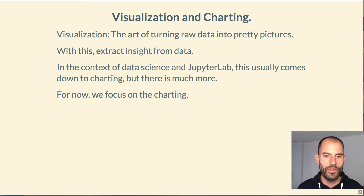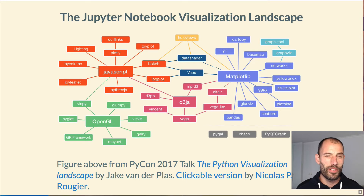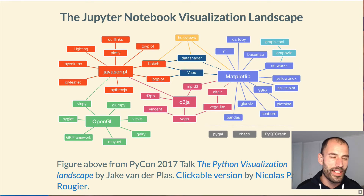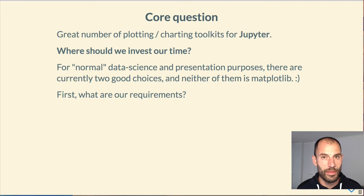For the purpose of this lecture, we focus on charting toolkits. This is a figure from a talk given by Jake van der Plas at PyCon 2017, titled 'The Python Visualization Landscape.' It perhaps could have been titled 'The Jupyter Visualization Landscape,' because most of the options he talked about were visualization and charting libraries used in Jupyter. So the core question is: with such a great number of plotting and charting toolkits for Jupyter, where should we invest our time? All of these various toolkits have different strong points and work better for different domains.